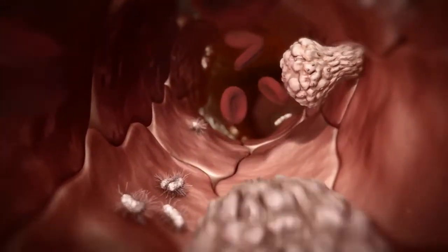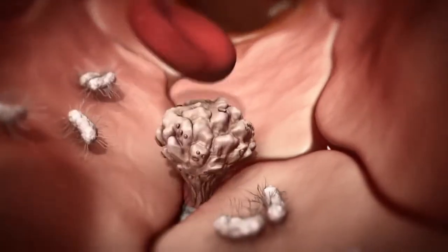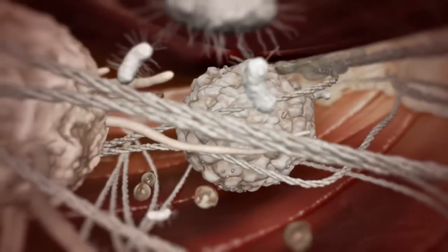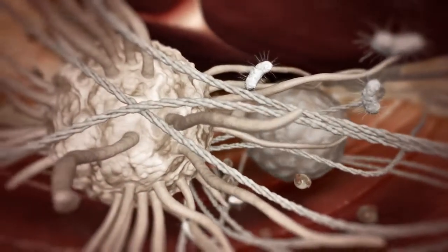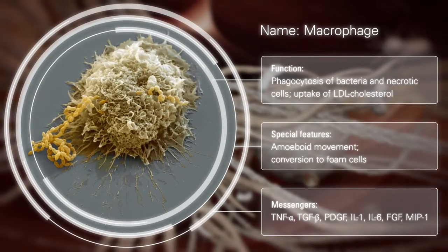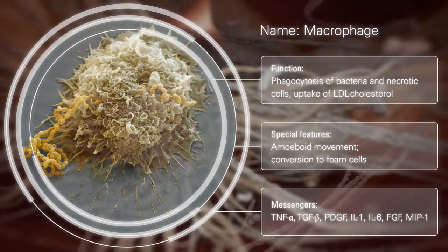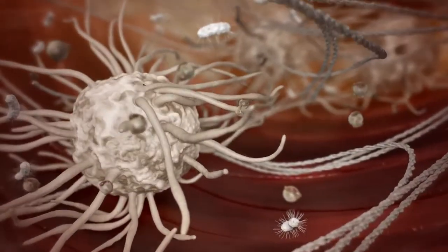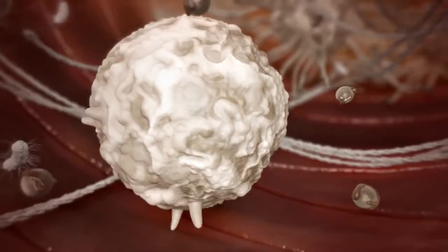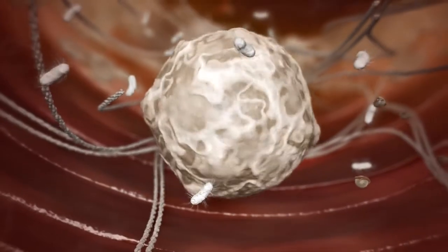The next step in the development of atherosclerosis is the formation of so-called fatty streaks. Some white blood cells travel into the vessel wall and differentiate into macrophages. By absorbing harmful cholesterol, they turn into foam cells. Periodontal bacteria promote this process, leading to even more fatty deposits in the blood vessel walls.